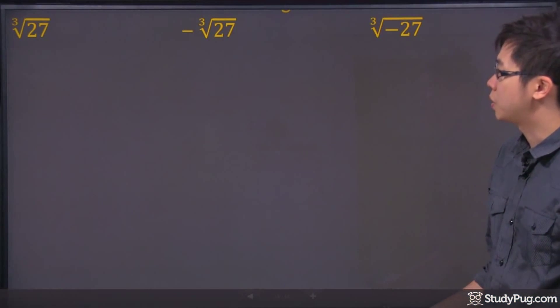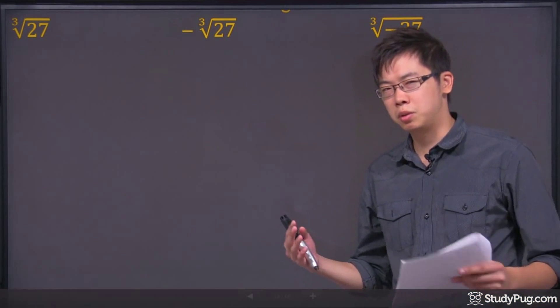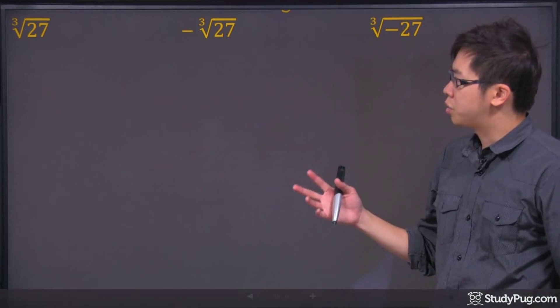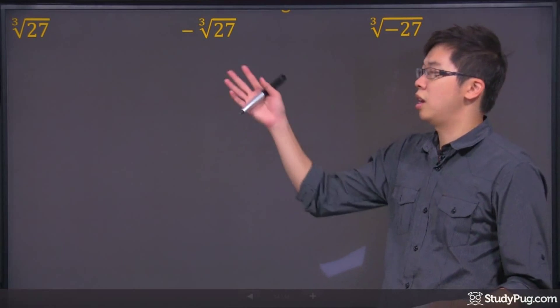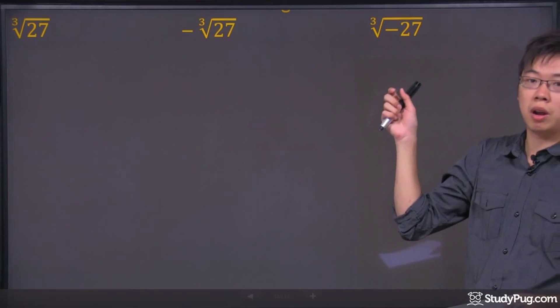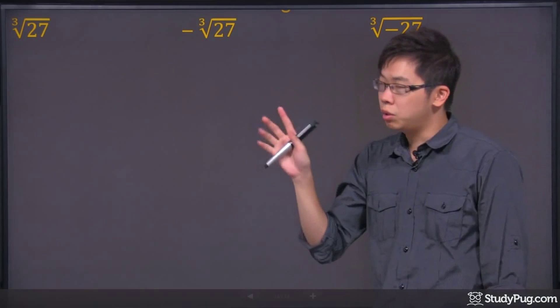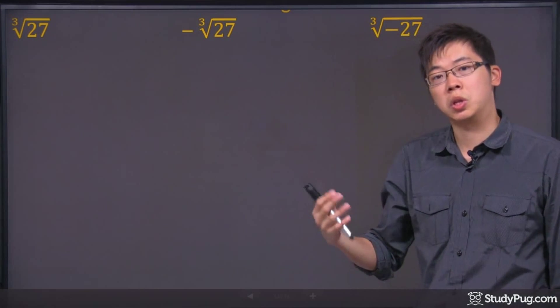Hi, so welcome to this question here. This is very similar to the one before this, where you're trying to figure out what happens if there's a negative sign in the front or inside the radical, but this time the root number is 3, which is an odd number.